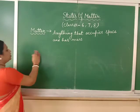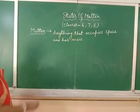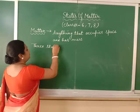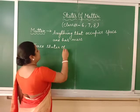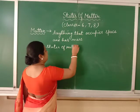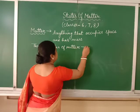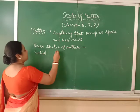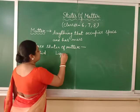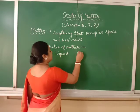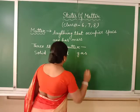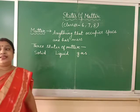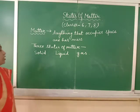If we see, the matters existing in this universe are in three states. Three states of matter — all the matters are classified. Some matters are in solid state, some matters are in liquid state, and some matters are in gas state. So solid, liquid, and gas — these are the three states of matter.